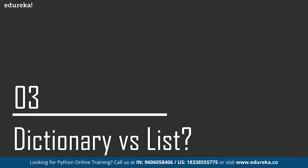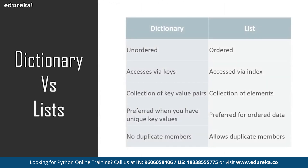Let's understand how dictionary is different from a list in Python. First, a list is ordered but the dictionary is unordered. Next, a list has indexes, but to access elements in a dictionary we use the keys as indexes. A list is a collection of elements, but in a dictionary we have key-value pairs as elements. A list is often preferred for ordered data, but dictionary is preferred when the data has unique key values. Also, lists can have duplicate elements, but in a dictionary the keys must be unique, although values can be duplicated.